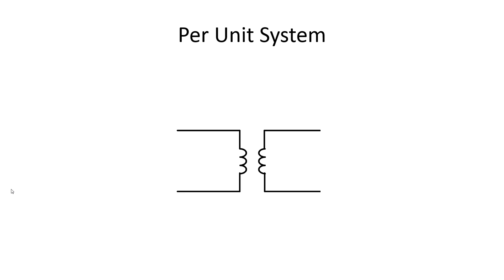Let me apply the full rated voltage to the primary of this transformer: 12 kV. Of course the rated voltage will appear on the secondary, 120 V. But if instead of volts we represent each voltage in percent, we can say we're applying 100% to the primary and getting 100% on the secondary. In per unit, we're applying one per unit and getting one per unit.